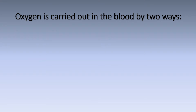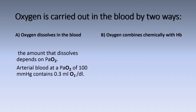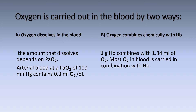Oxygen is carried in the blood by two ways. First, oxygen dissolved in the blood. Or, oxygen combined chemically with hemoglobin, forming oxyhemoglobin. The amount that dissolves depends on PaO2. The arterial blood at PaO2 of 100 mmHg contains about 0.3 mL oxygen per deciliter. While 1 gram of hemoglobin combines with 1.34 mL oxygen. So most oxygen in the blood is carried in combination with hemoglobin in the form of oxyhemoglobin.